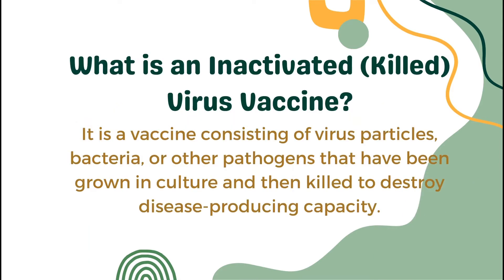What is an inactivated or killed virus vaccine? This is a vaccine consisting of virus particles, bacteria, and other pathogens that have been grown in culture and then killed to destroy disease-producing capacity. In other terms, pathogens for inactivated vaccines are grown under controlled conditions and are killed as a means to reduce infectivity and thus prevent infection from the vaccine.